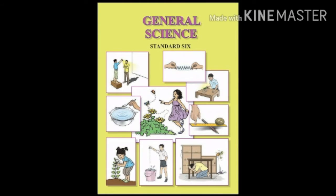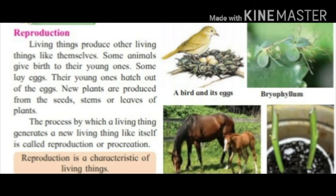Hello students, today we are going to start with our Standard 6 subject Science, Lesson Number 2: The Living World, with the second half revision of our lesson. The first topic which we are continuing is characteristics of living things.